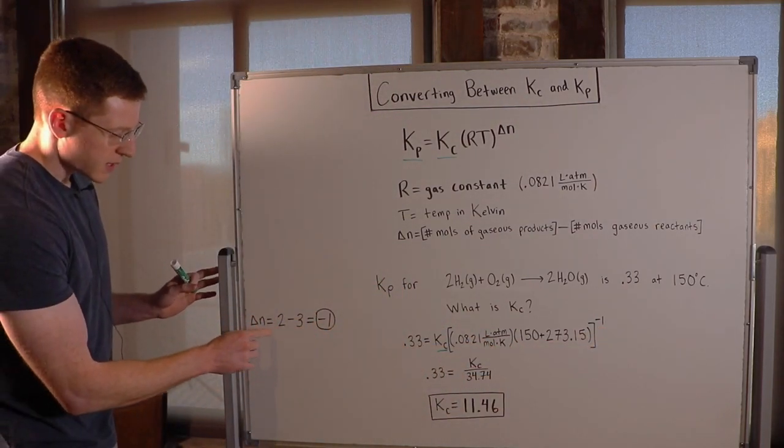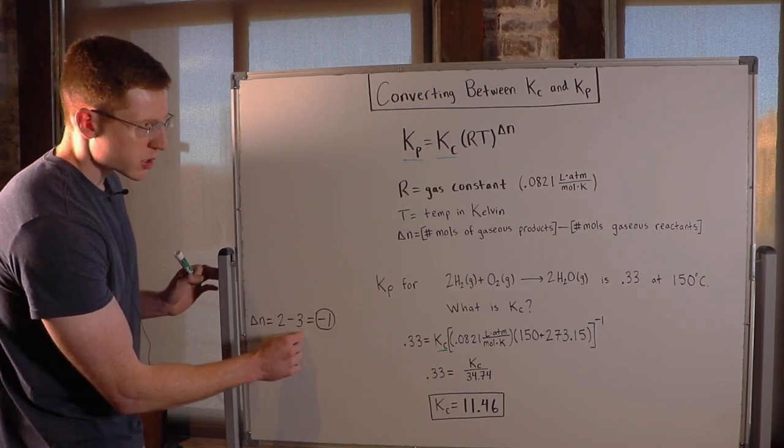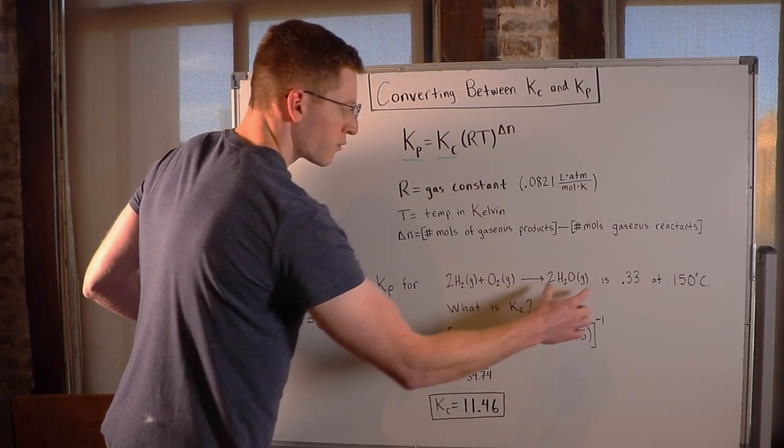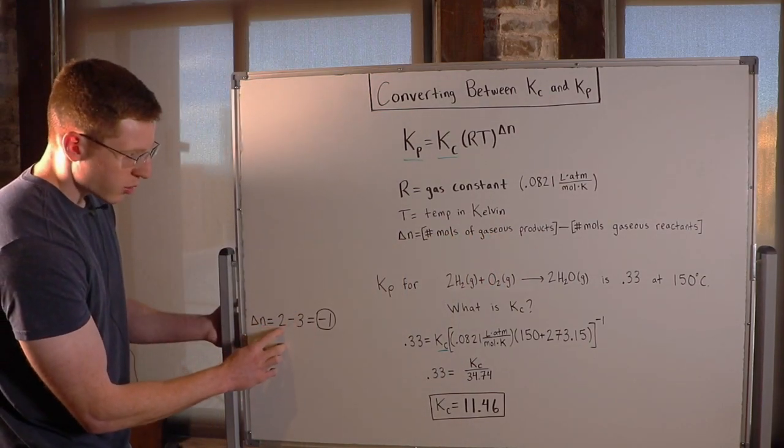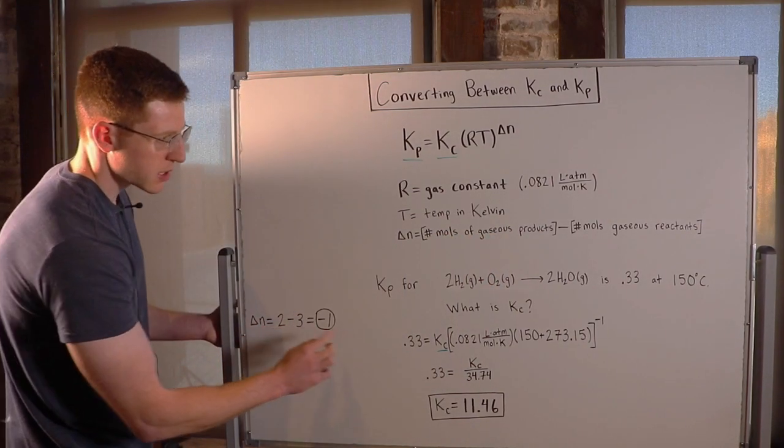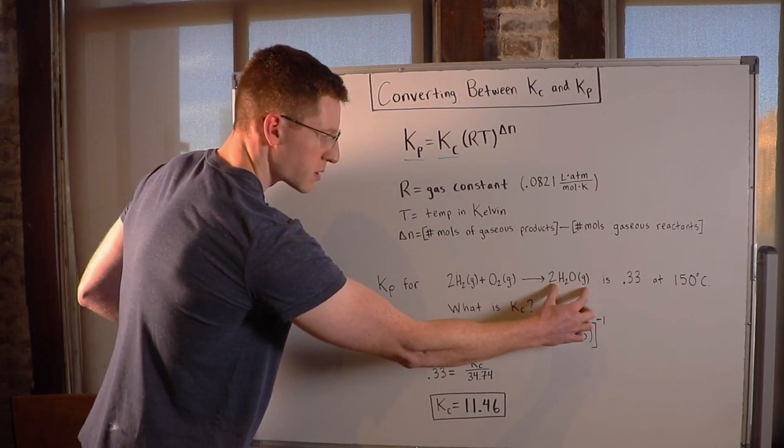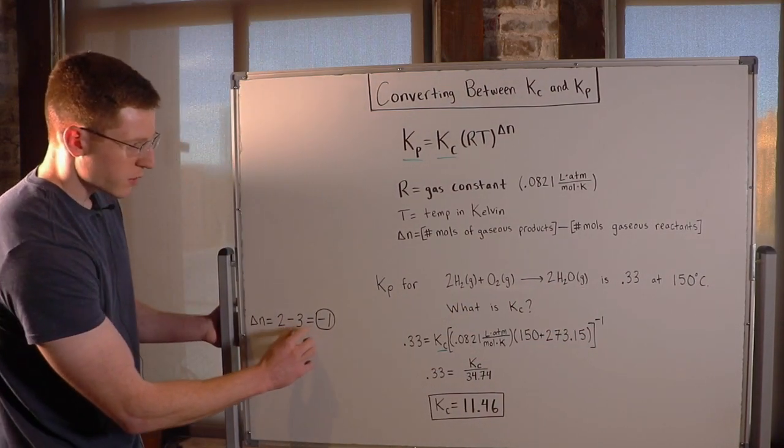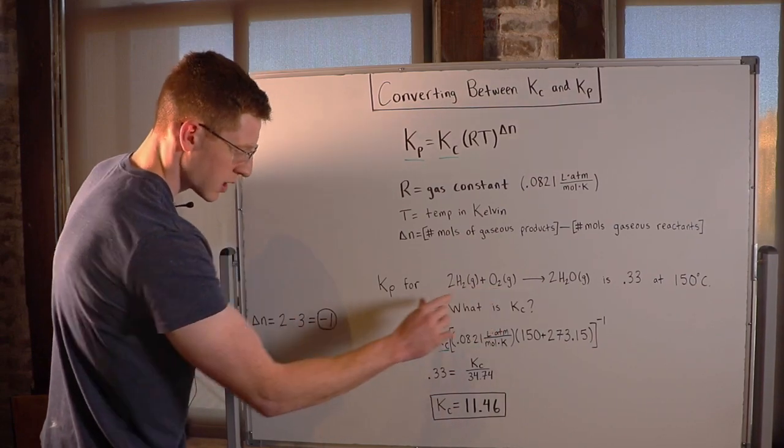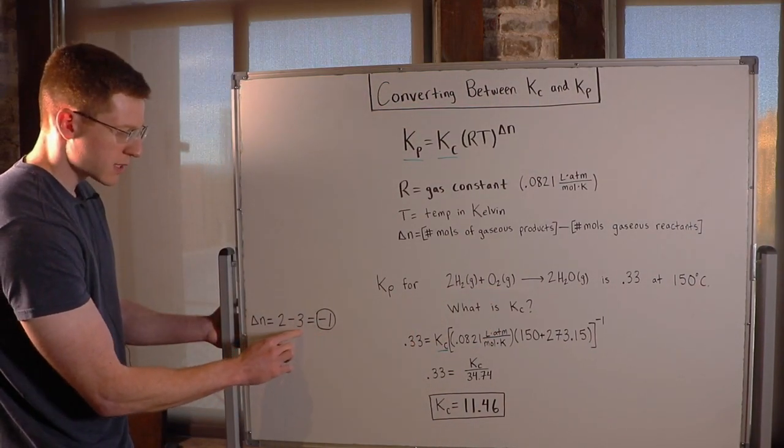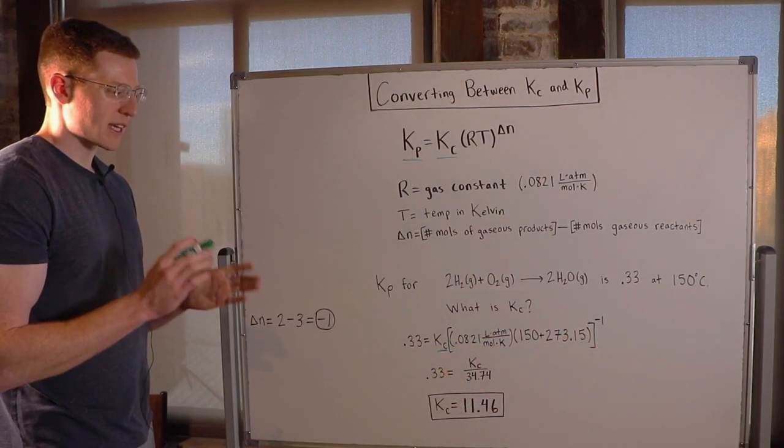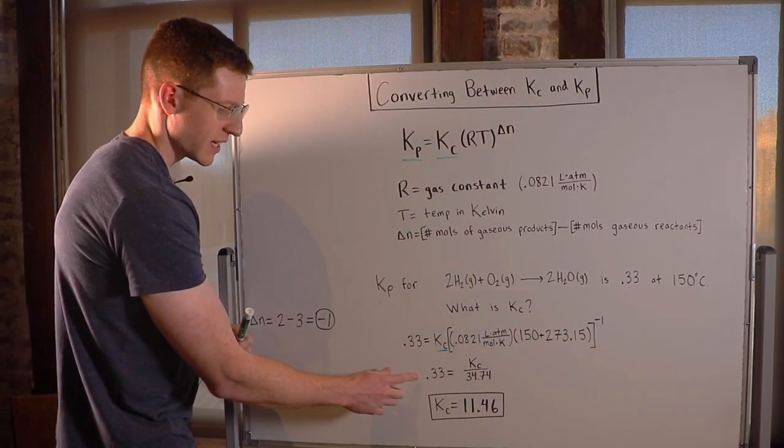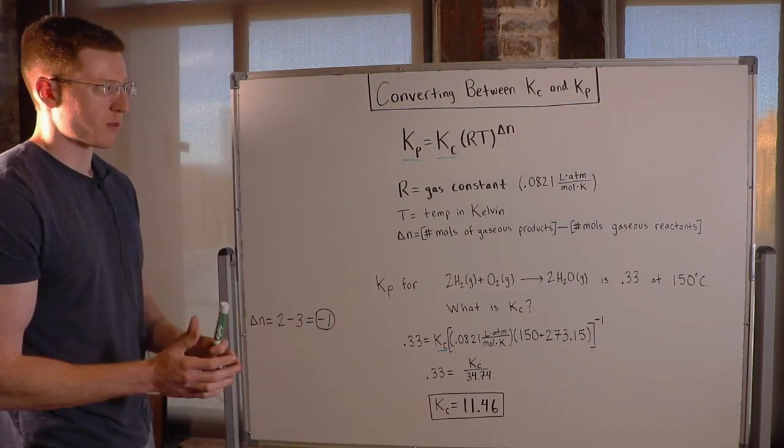And I got that by subtracting the number of moles of gaseous reactants from the number of moles of gaseous products. We had two moles of gaseous products minus three moles, one plus two, three moles of gaseous reactants. So two minus three is negative one for our delta N. So at this point, it's just algebra. You isolate your Kc and you find that it is 11.46.